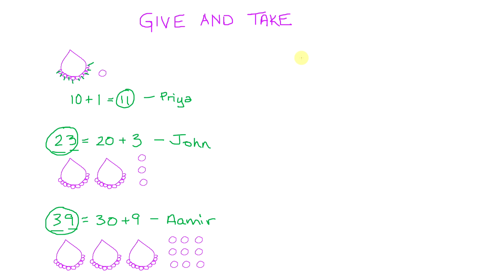Let's try an example with just numbers. Let's try to find out how many pearls John and Amir bought in total. Here I have a column for necklaces and a column for loose pearls. We know that John has 23 pearls, so that's 2 necklaces and 3 loose pearls. Amir in total bought 39 pearls, so that's 3 necklaces and 9 loose pearls.